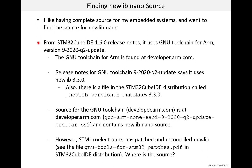I started with the release notes for STM32CubeIDE version 1.6.0, which was the IDE version I was using when I did this. The release notes state which version of the GNU toolchain it uses, and the toolchain is available at developer.arm.com. Looking at the release notes for that version of the toolchain, it says it uses NewLib 3.3.0. By chance I also found a file in the IDE installation that has the version number for NewLib — it also says 3.3.0, so we are pretty certain.